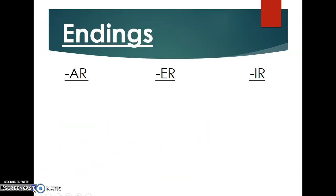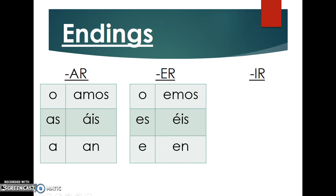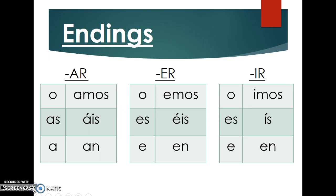Your endings are as follows. For AR verbs: o, as, a, amos, áis, an. For ER verbs: o, es, e, emos, éis, en. For IR verbs: o, es, e, imos, ís, en. Notice for the vosotros form, each one does have an accent — áis for AR, éis for ER, and ís for IR. Make sure you are aware of that and copying these notes accurately.